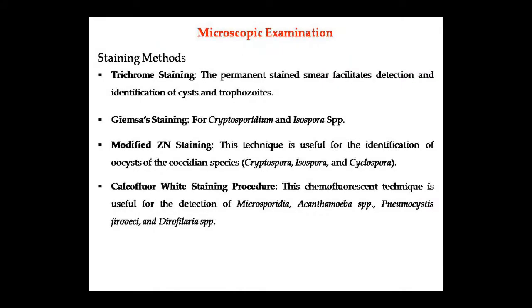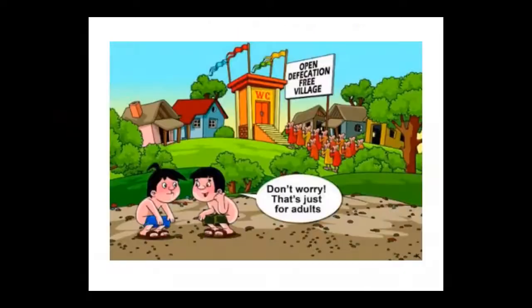For staining methods: trichrome staining, Giemsa staining, and modified Ziehl-Neelsen staining can be used for Cryptosporidium and different organisms. These are the staining names you need to read and remember. This concludes our stool examination class. The important points have been covered — what to write in the exam. If there are any doubts, you can send your questions by mail.